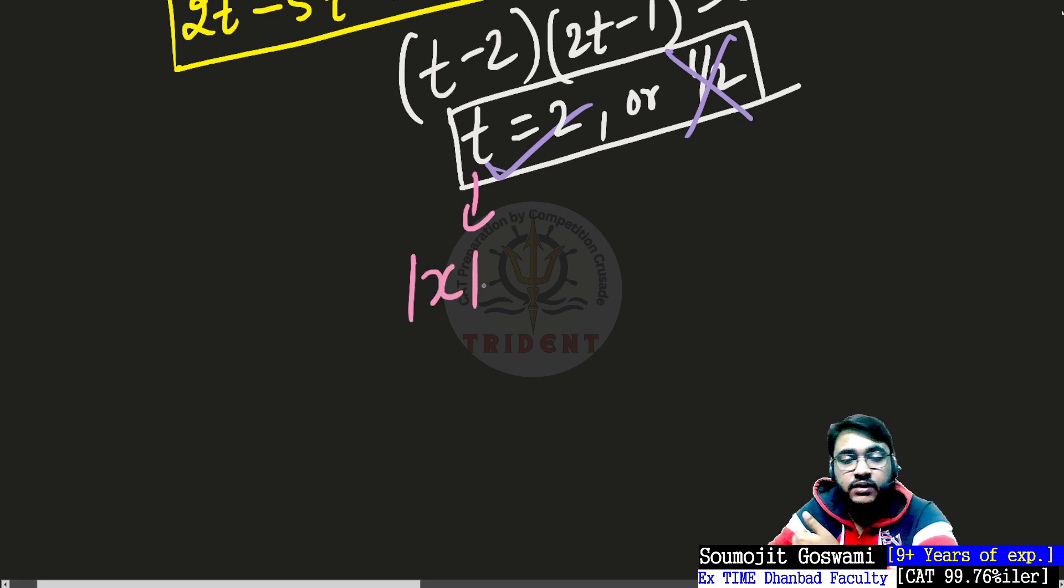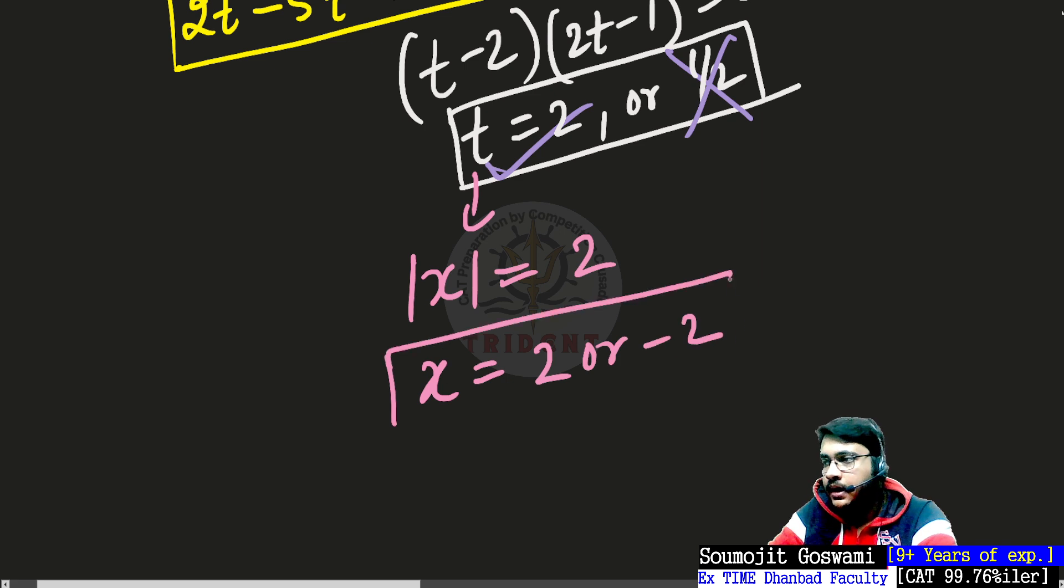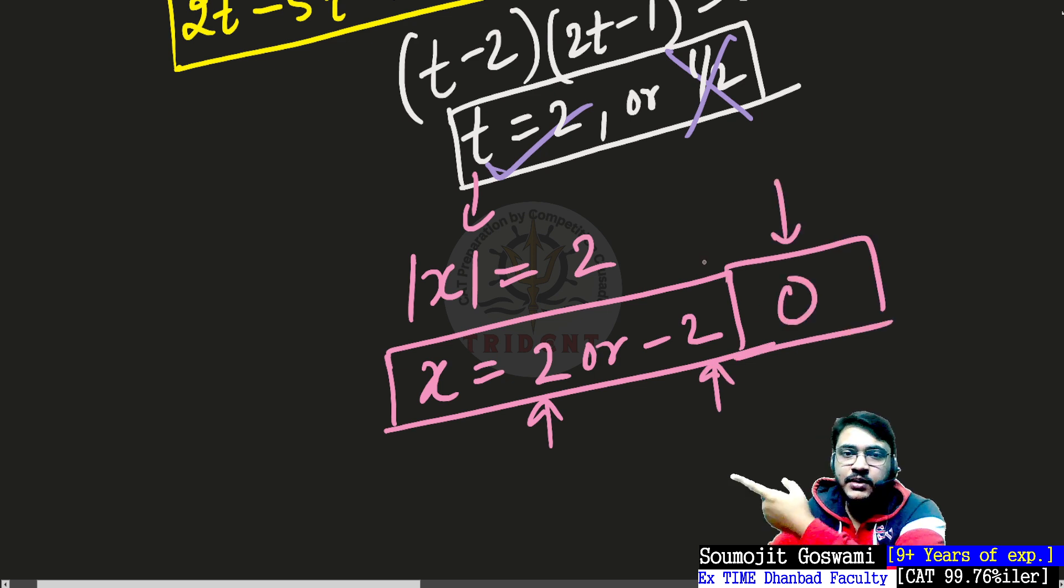No, you guessed it right. t will be again replaced with mod of x because remember we are not finding for t, we are finding for x. So mod of x equals 2, that means x could be 2 or minus 2. So the final solution set is going to be 2 or minus 2, and remember 0 also because we eliminated it accounting for the fact that t could be 0.